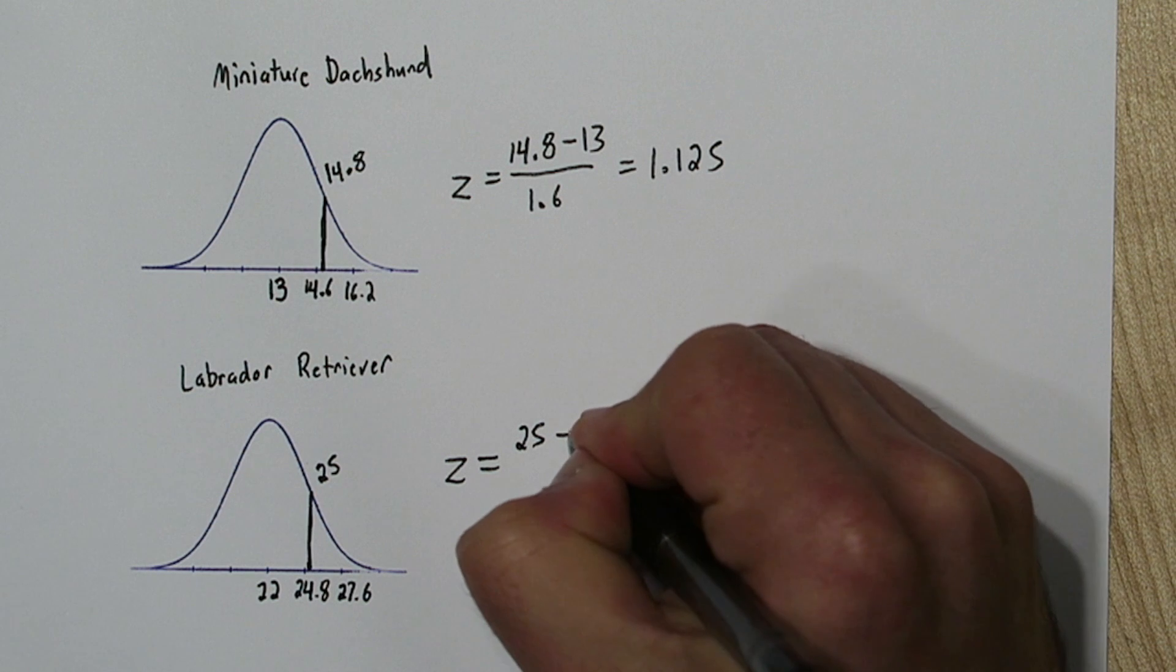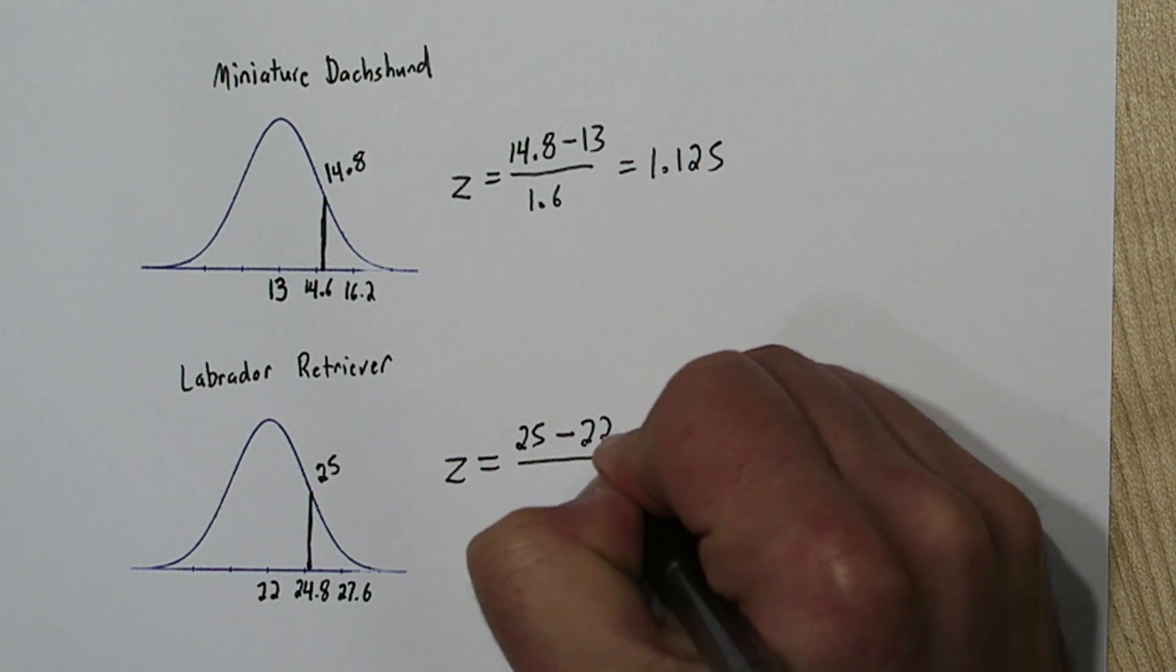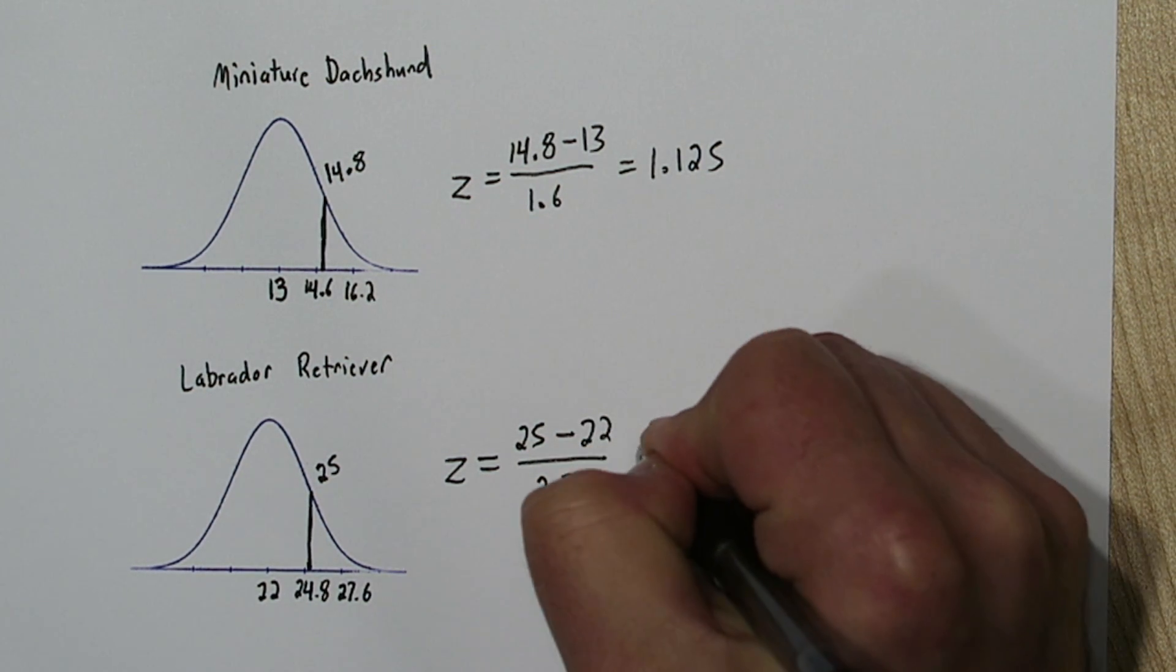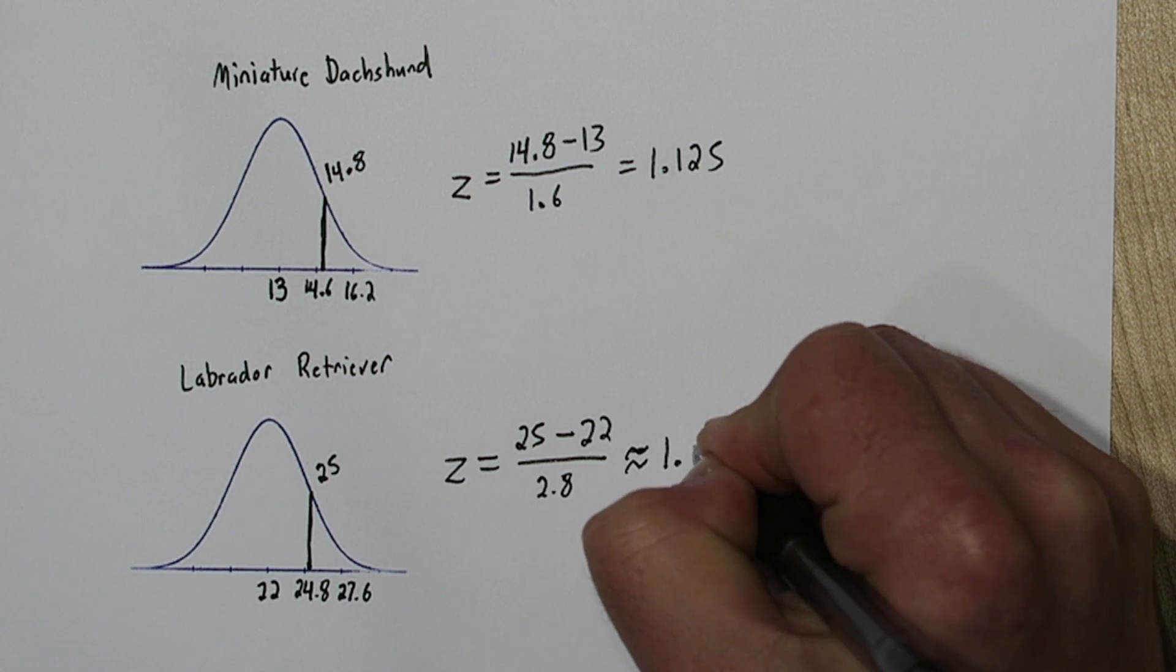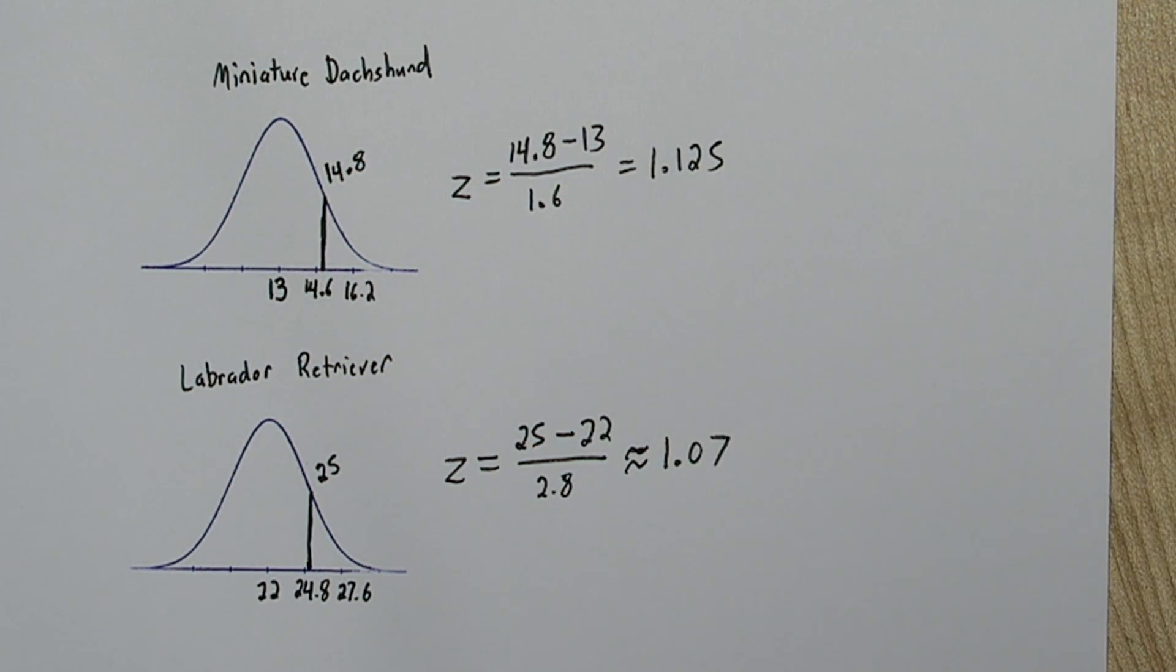For the Labrador, we take its 25 miles per hour, subtract the mean, and divide by standard deviation, and we get about 1.07.